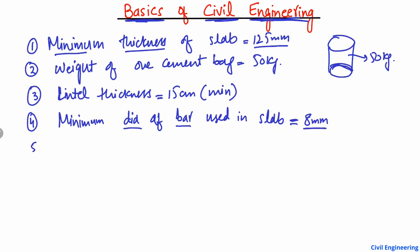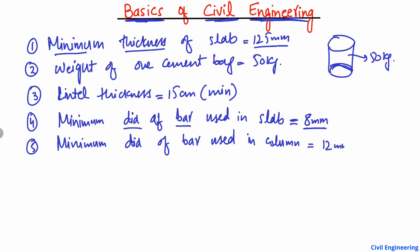Similarly, the minimum diameter of bar used in a column is 12 millimeters. You should always use 12 millimeters or greater — you cannot use less than 12 millimeters, such as 6 mm or 8 mm, in columns. The minimum value for columns is 12 millimeters.